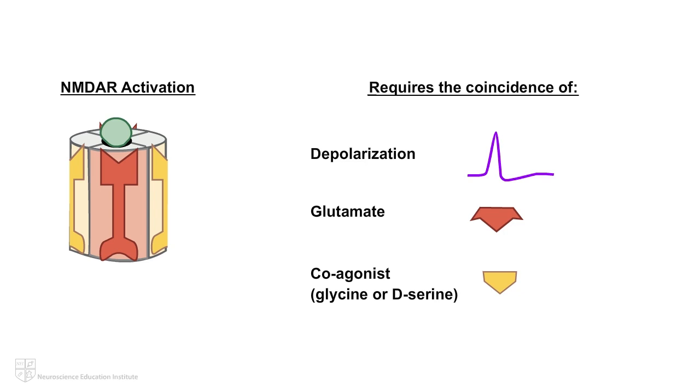In general, an NMDAR will only be activated, allowing calcium to flow inside the postsynaptic neuron if the three required elements - membrane depolarization, glutamate, and glycine or d-serine - are all present at the same time in the glutamatergic synapse.